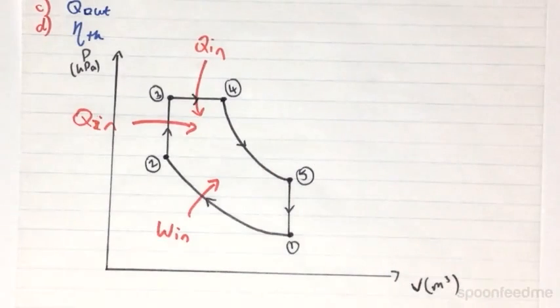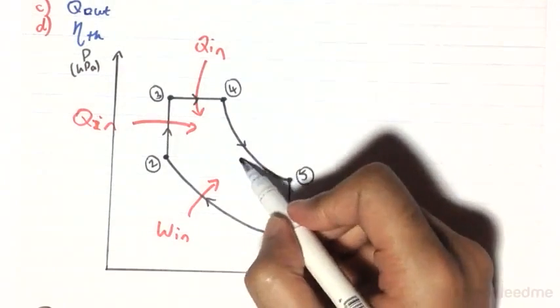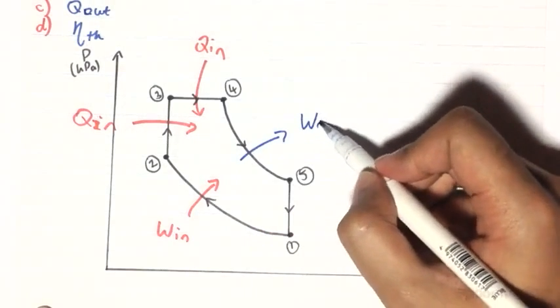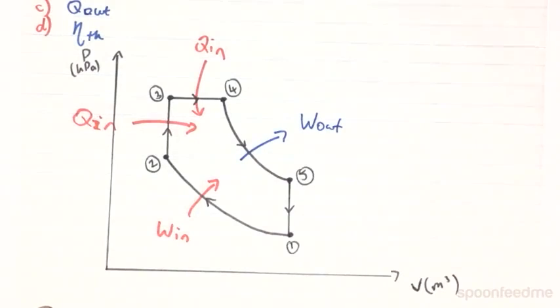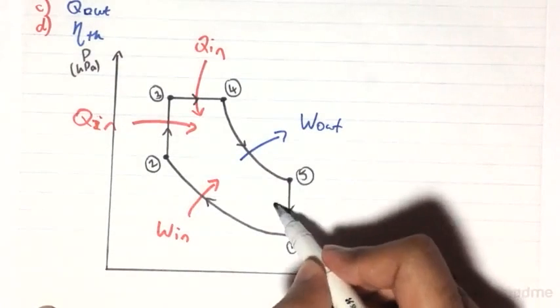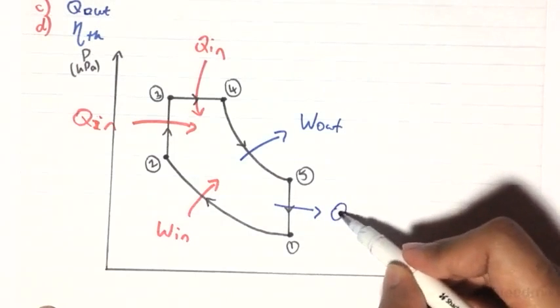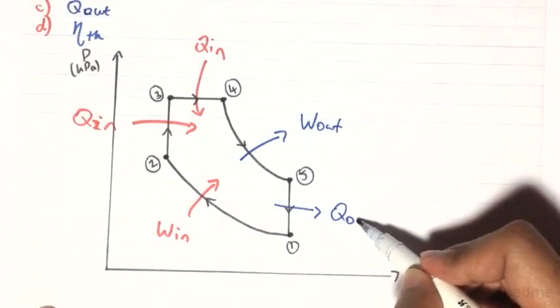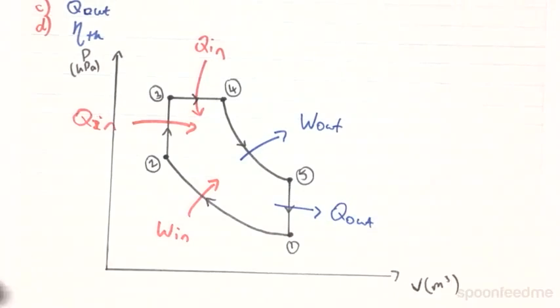And then finally after adding these heats, we have a work that is going to go out of the system in the isentropic expansion process. And there is going to be a heat expulsion at this isovolumetric process 5-1.